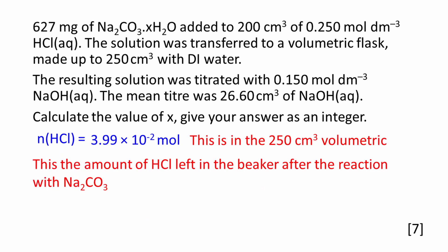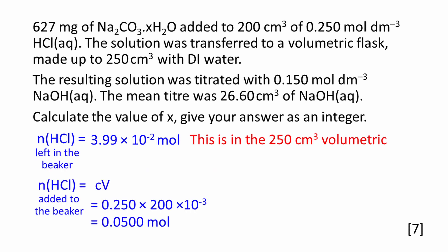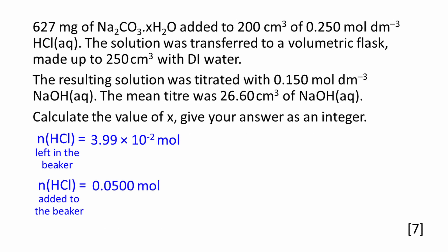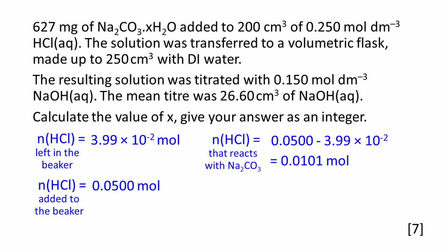An excess of hydrochloric acid was added to sodium carbonate in a beaker. 3.99 × 10⁻² moles is the amount of hydrochloric acid left in the beaker after the reaction with Na₂CO₃. The amount of hydrochloric acid originally added to the beaker can be worked out using amount = concentration × volume, which equals 0.0500 moles. The difference between these two amounts is the amount of hydrochloric acid that reacted with the sodium carbonate, which works out to be 0.0101 moles.